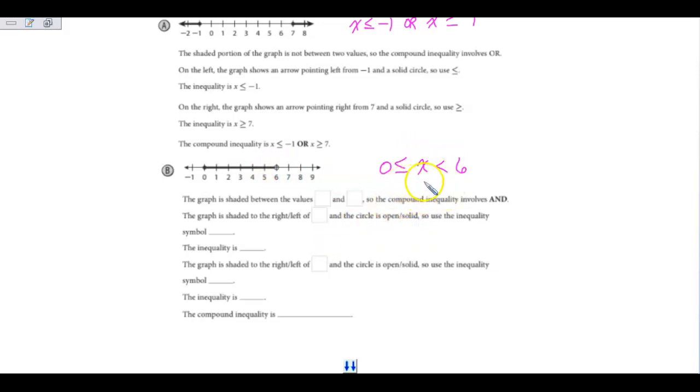Because it's an AND statement, I can leave it like this, or I can write it as X is greater than or equal to 0, and X is less than 6. These both are correct ways of writing this.